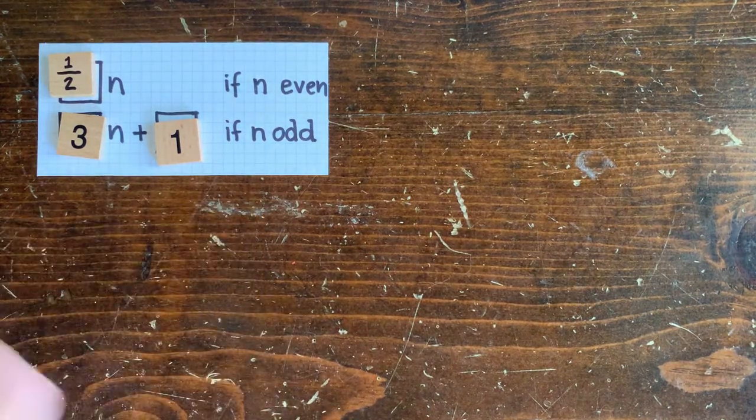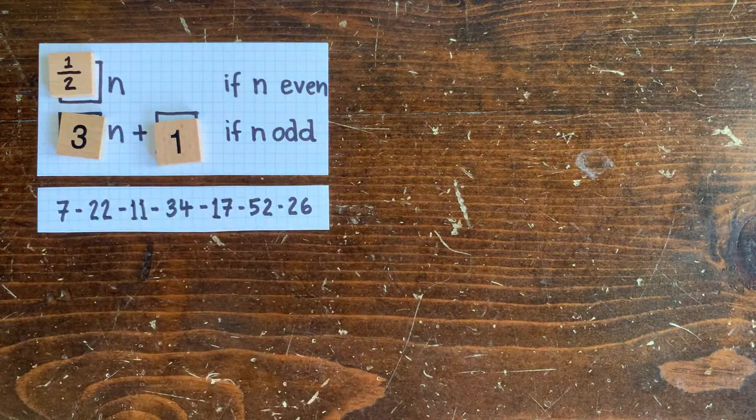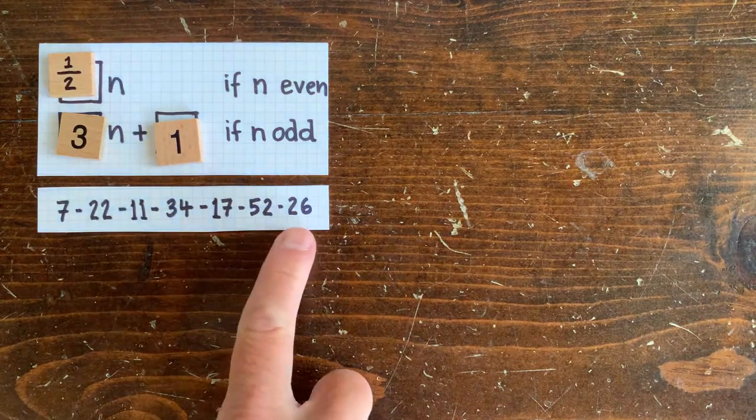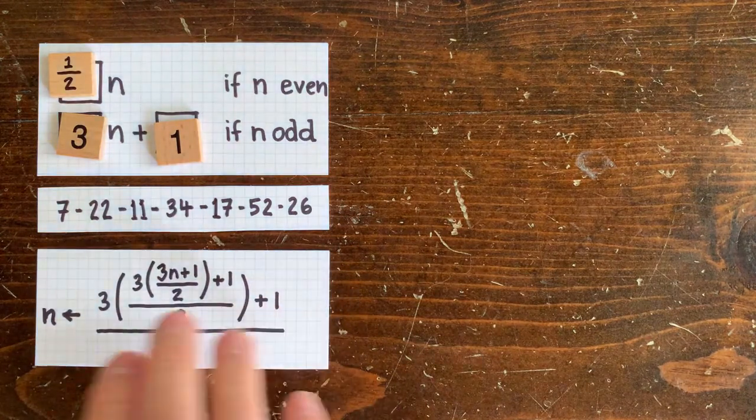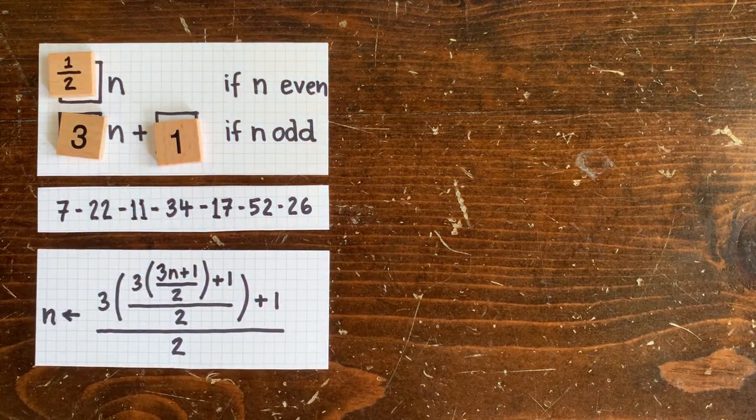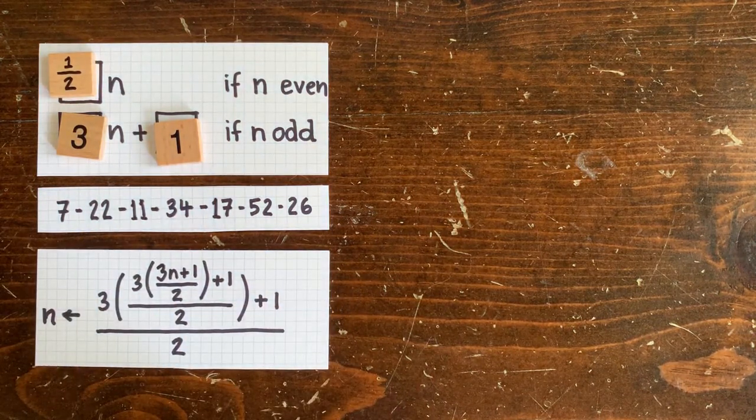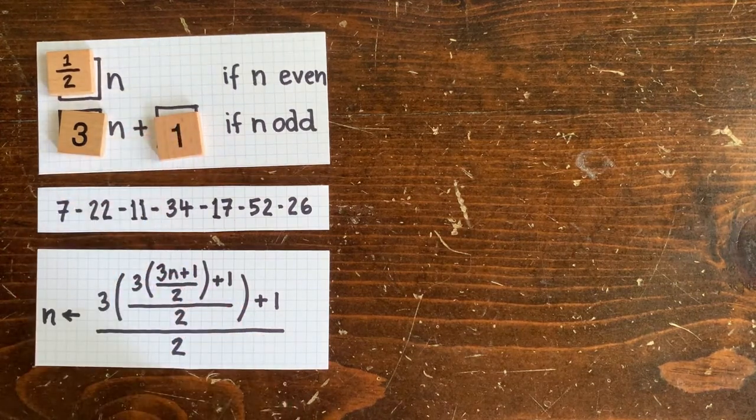The big question is, does every start number eventually reach 1? If we start with 7, we get 22, 11, 34, 17, 52, 26. So 26 is the result of this hairy function. If we could just get rid of this annoying plus 1, then things would be a lot simpler.